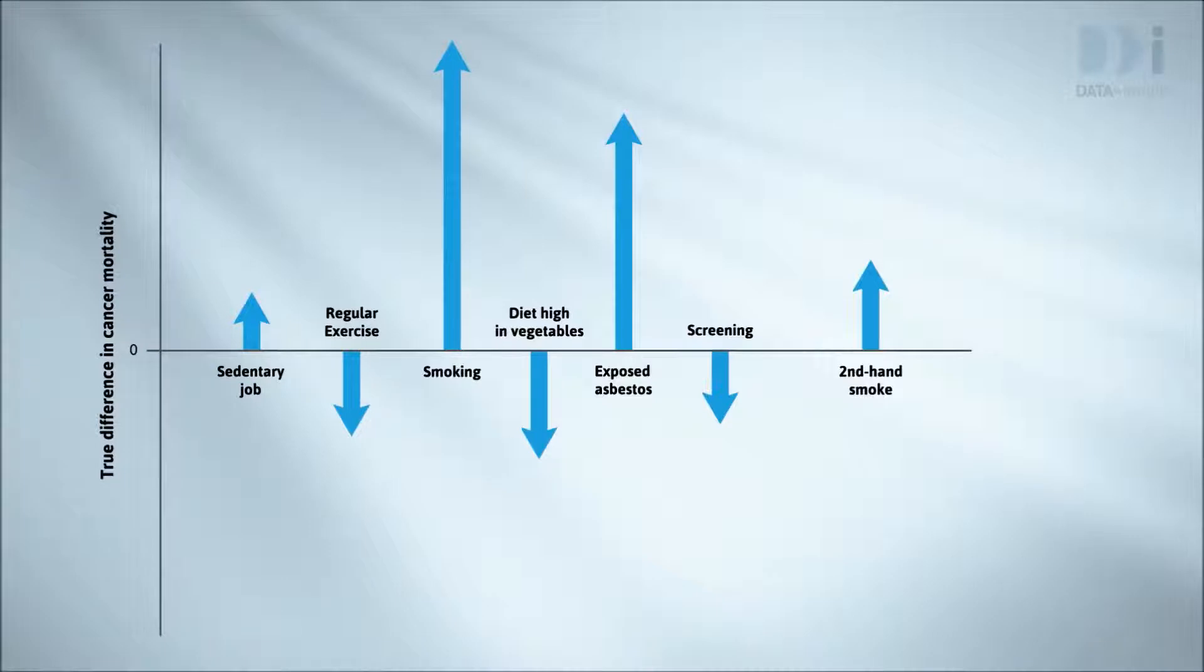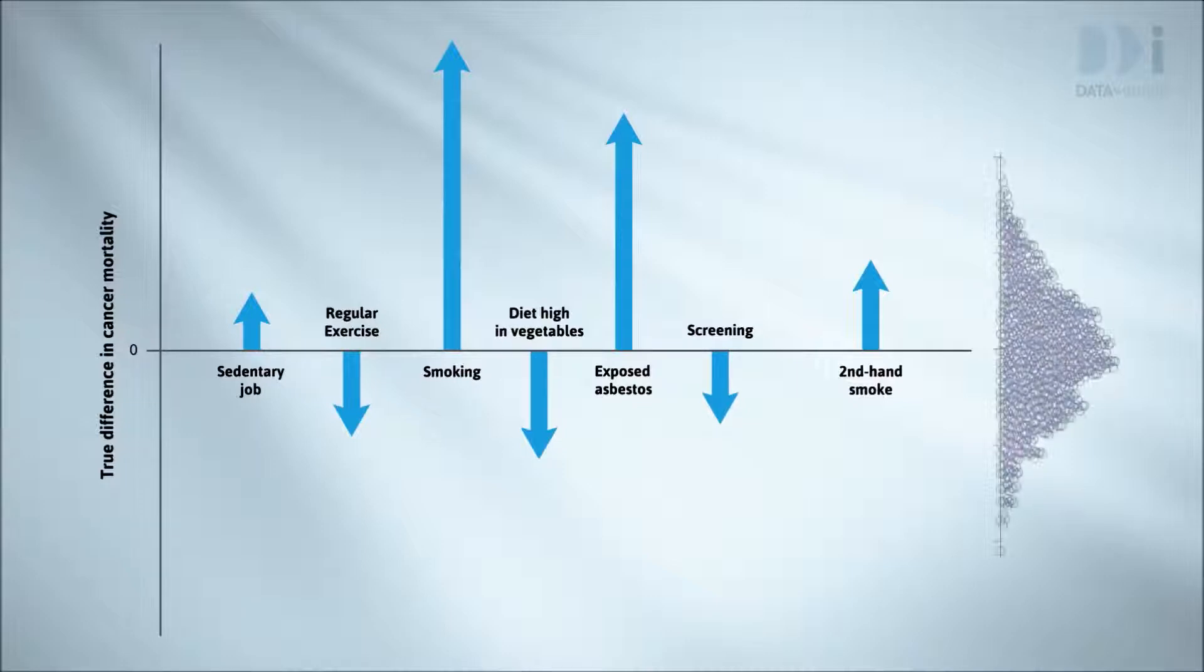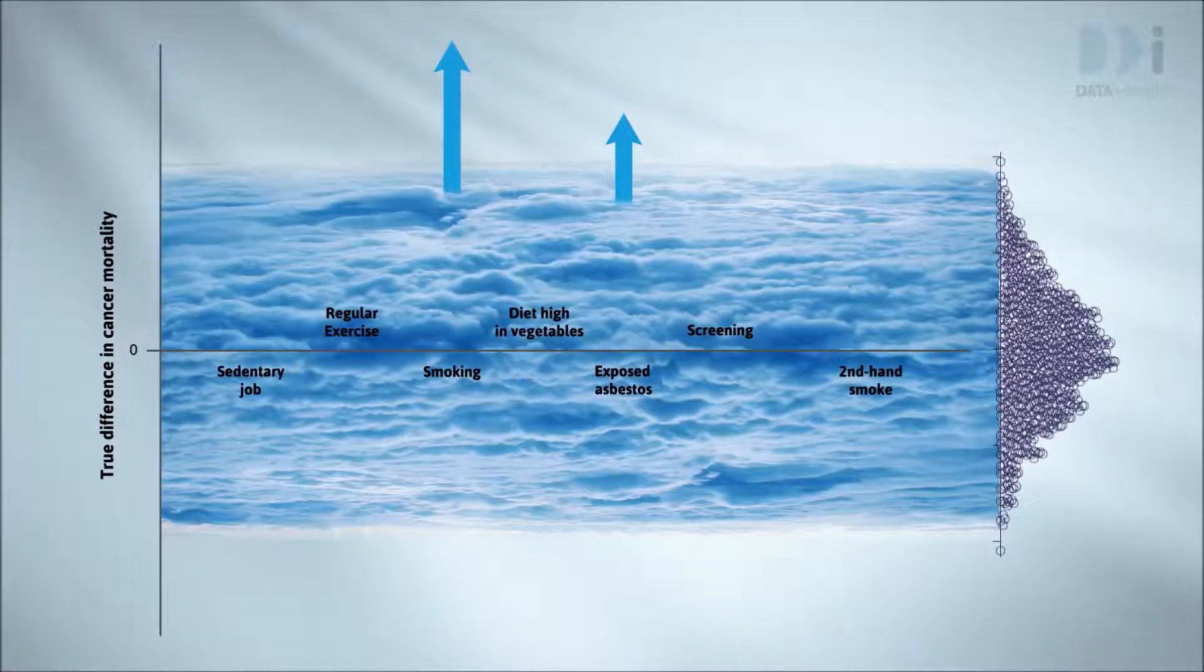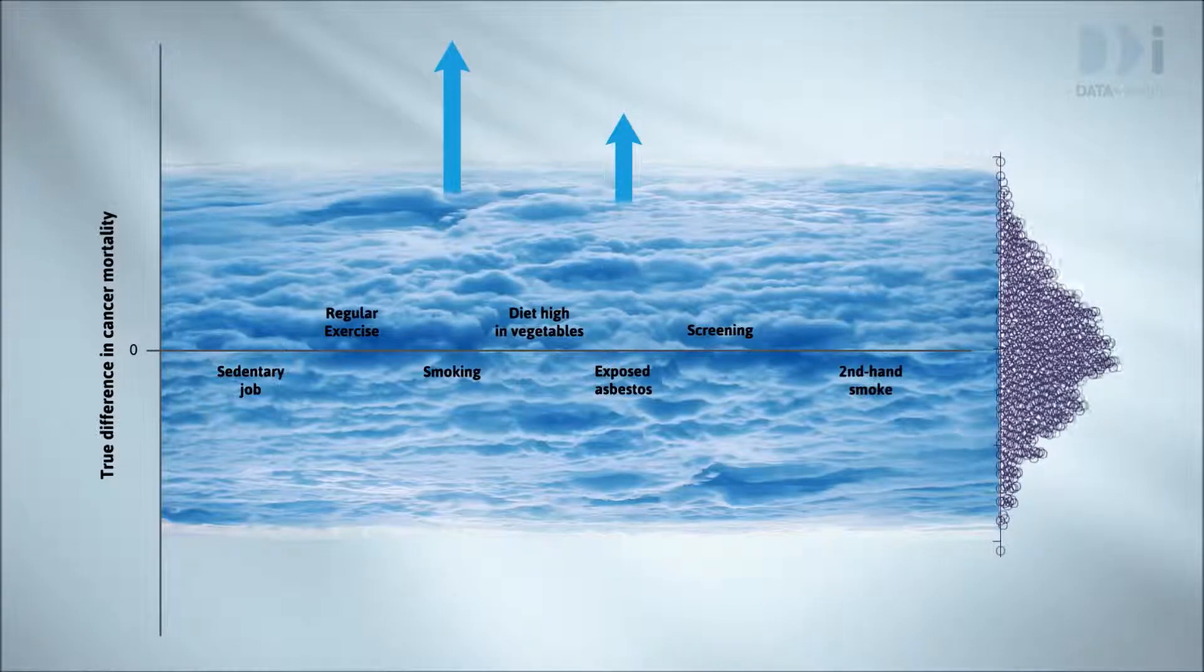Consider this scenario. The true differences in mortality rates due to having or not having the depicted characteristics. Suppose that randomised experiments were run for each and all had the same levels of random variation. The randomisation variation and differences is shown off to the right. It's blowing out a dense band of fog across the middle of the picture.